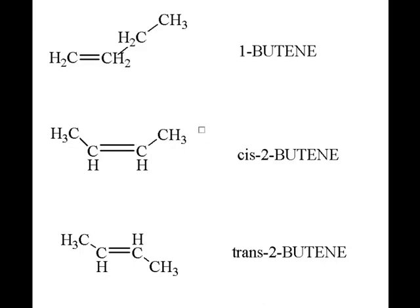When the two ends of the chain are on the same side of the double bond, it's called cis. When the two ends of the chain are on opposite sides of the double bond, it's called trans.